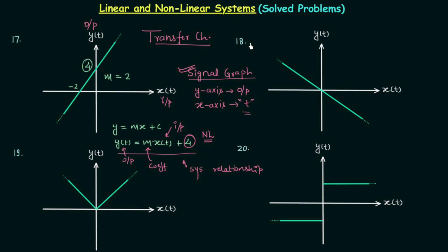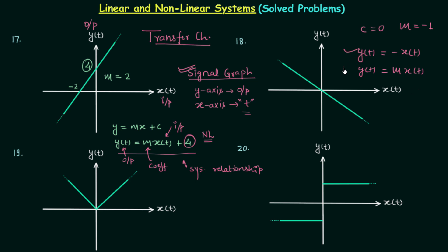Moving to problem number 18: we again have a straight line, but this time it passes through the origin, so the intercept c is 0. The slope is negative with magnitude 1, giving y(t) = -x(t), or equivalently y(t) = m·x(t). There is only a coefficient and the output and input terms — the coefficient does not affect linearity — so the system is linear.